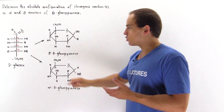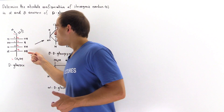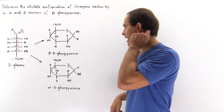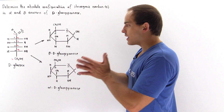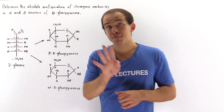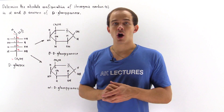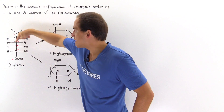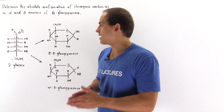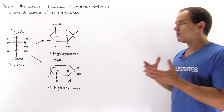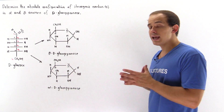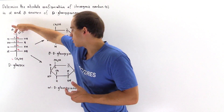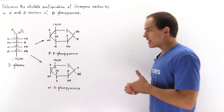If we had L-glucose, this hydroxyl group would point in the opposite direction — it would point to the left side. Now notice on this straight chain D-glucose, we have only four stereogenic carbons: carbon number two, three, four, and five. The carbons that contain the asterisk next to them are the stereogenic carbons; they contain four different groups attached to them. The first carbon and the last carbon are not stereogenic.